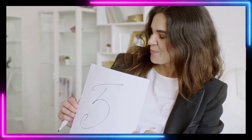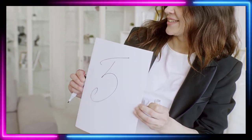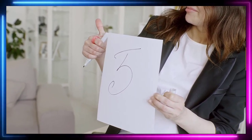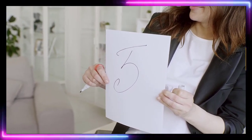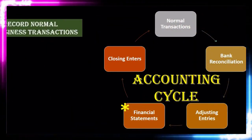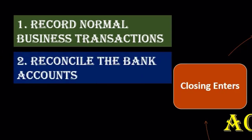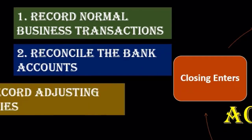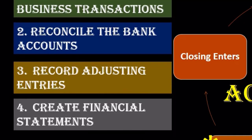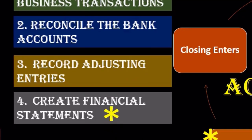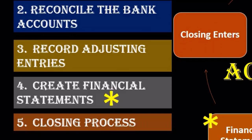Those are the five steps to keep in mind. When you have a broad view of the accounting process, you want these five steps in mind: starting with normal business transactions — which is most of what goes on throughout the entire month — then at the end of the month, a busy time for the accounting department, we reconcile the bank accounts, then do the adjusting journal entries, then the financial statements (the main event), and then the closing process.